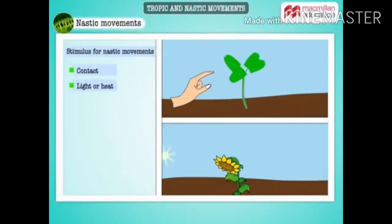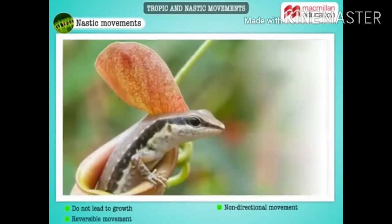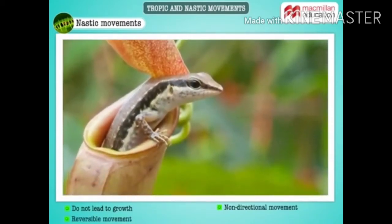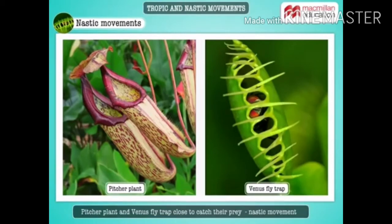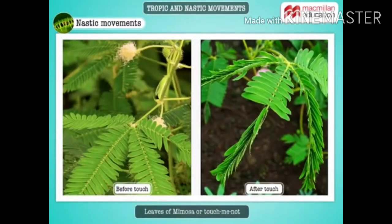Nastic movements in plants are also a response to stimuli such as contact, light, or heat. Nastic movements do not lead to growth and are non-directional movements. Nastic movements are reversible movements, unlike tropic movements. Pitcher plant and the Venus flytrap close and catch their prey as soon as the prey lands on them. The leaves of mimosa or touch-me-not plant close when they are touched. These movements do not depend on the direction of the stimulus.